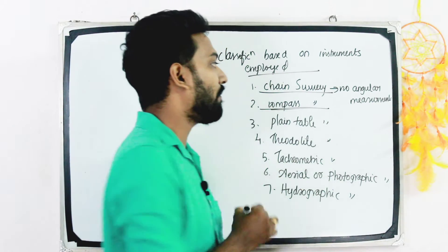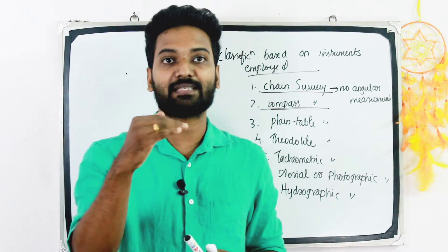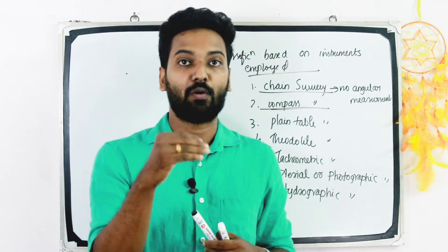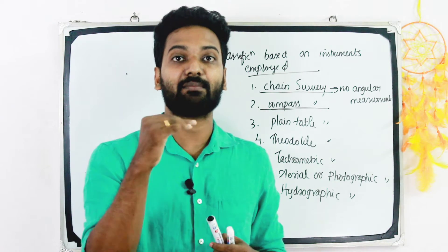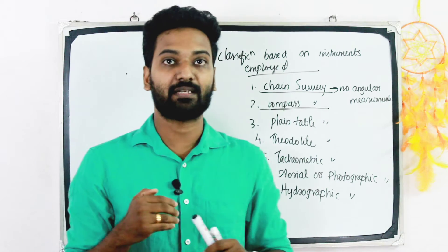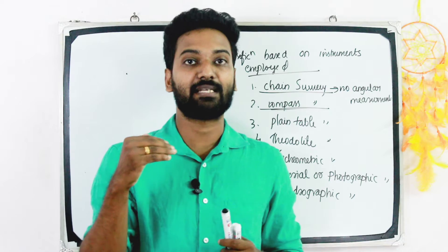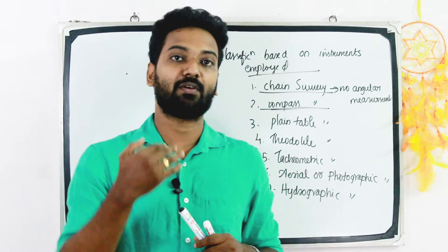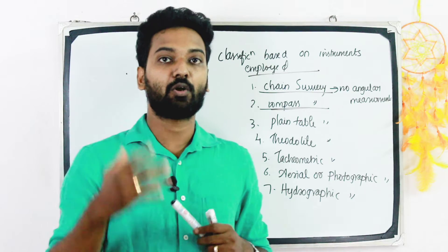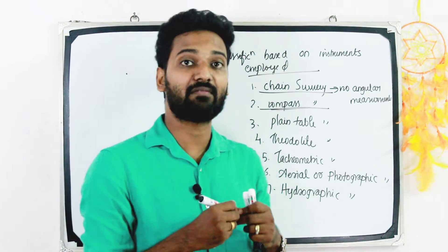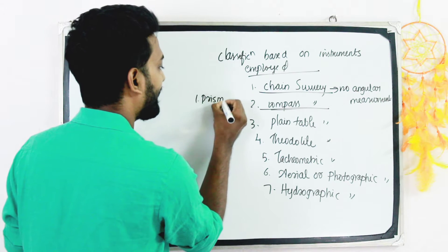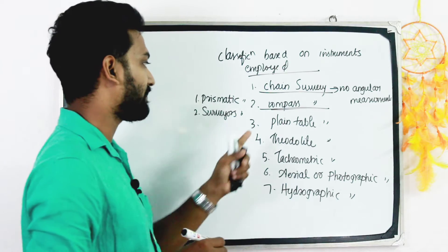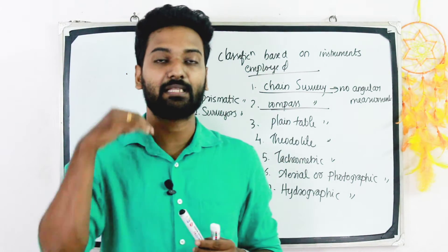The second one is compass survey. Compass survey is the system of survey in which the direction of survey lines are measured with a compass, and the length of lines are measured with a chain. There are two forms of compass in common use: first, prismatic compass; and second, surveyor's compass.